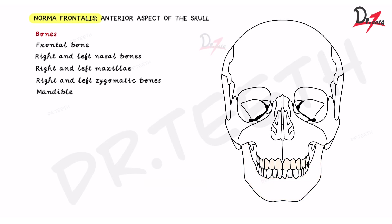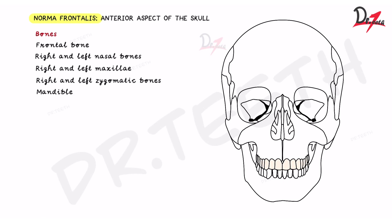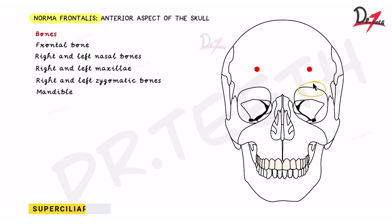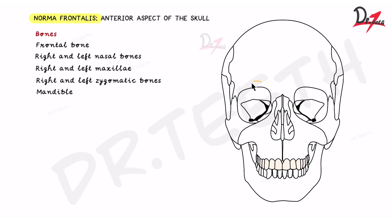Now let us look at the different anatomical features of norma frontalis. The first one is the forehead, which is formed by the frontal bone. Then we have the frontal prominence — if you look at yourself in the mirror you will find a prominence towards the head region. It is a low, round elevation which is seen above the superciliary arches. The superciliary arches are the bony elevations present at the superior aspect of the orbit.